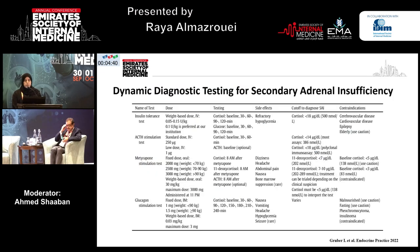The dynamic tests used in secondary insufficiency include the insulin tolerance test, which is less used nowadays, the low-dose ACTH stimulation test at one microgram, the metyrapone stimulation test, and the glucagon stimulation test.